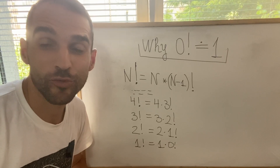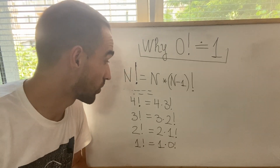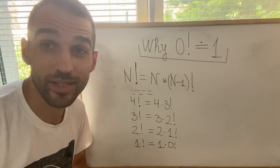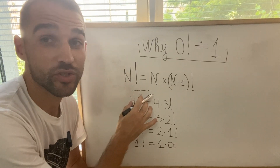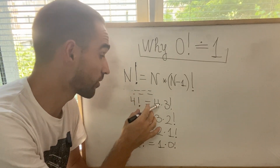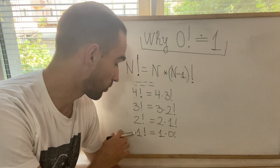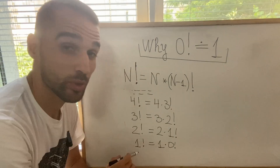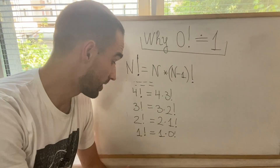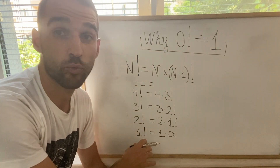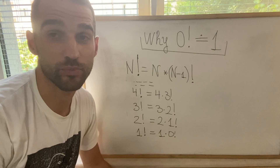Here is the most popular argument why zero factorial is defined as one, given by several YouTubers. They simply tell you that n factorial is just n times (n-1) factorial. Then, if we try to preserve the same pattern going down to 1 factorial, we must have 1 factorial equals 1 times 0 factorial, and since that equals 1, then 0 factorial should simply be 1.